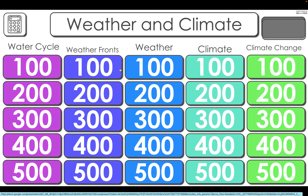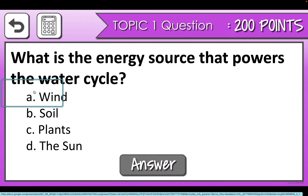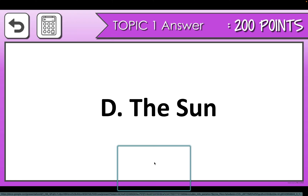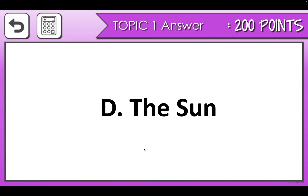The students will select the category they want to start with — maybe they'll say water cycle for 200. We click on that and then it has a question. All the teams answer the question, and then once everybody has answered, if I click on this answer, the answer populates.